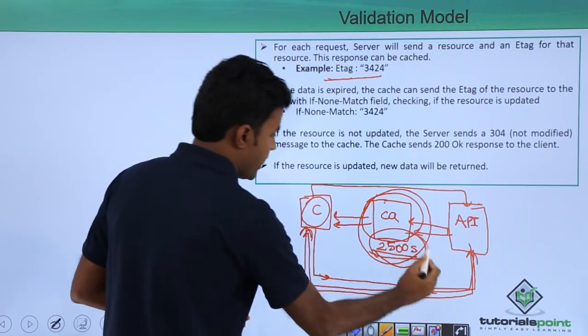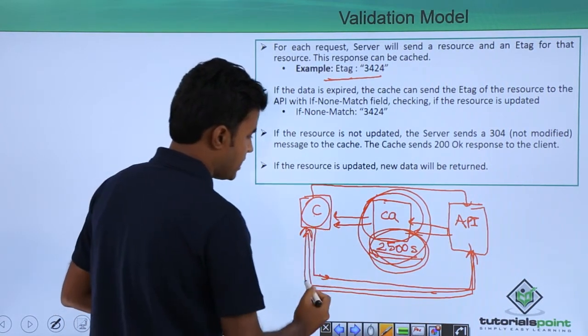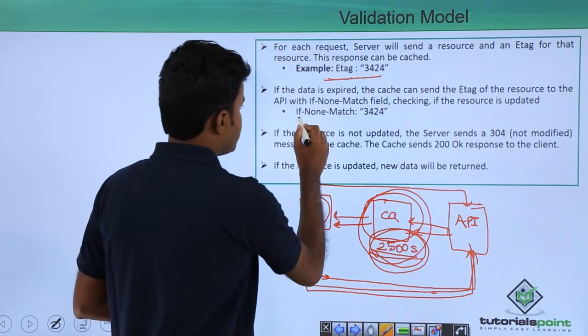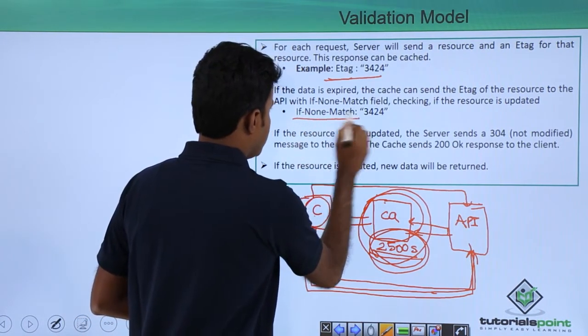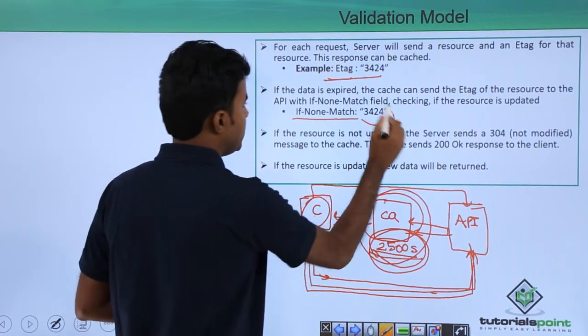And once the 2500 seconds are over, after the 2500 seconds, if the client sends a new request, what it will do is it will send a request with if-none-match header with the same e-tag over here.